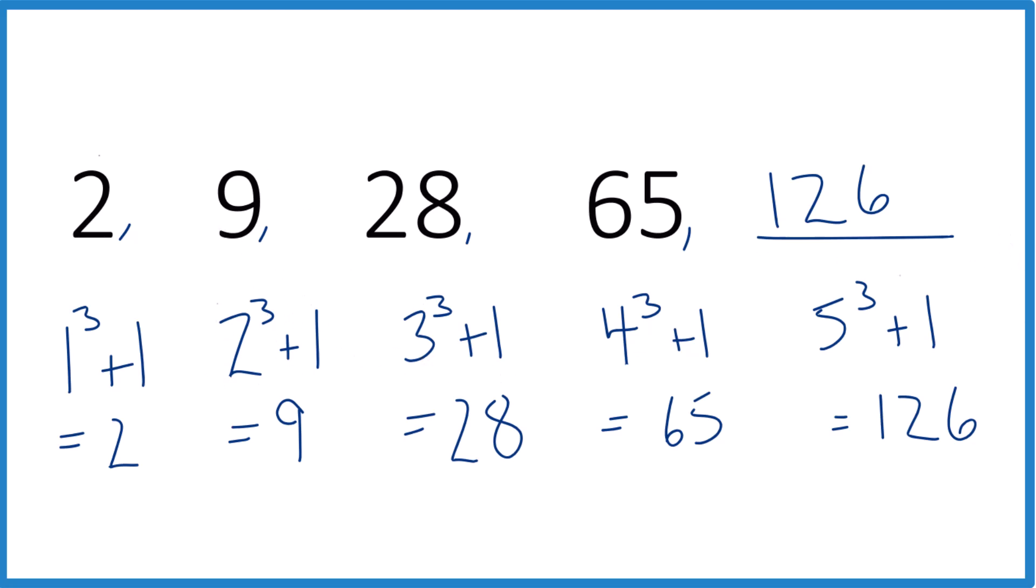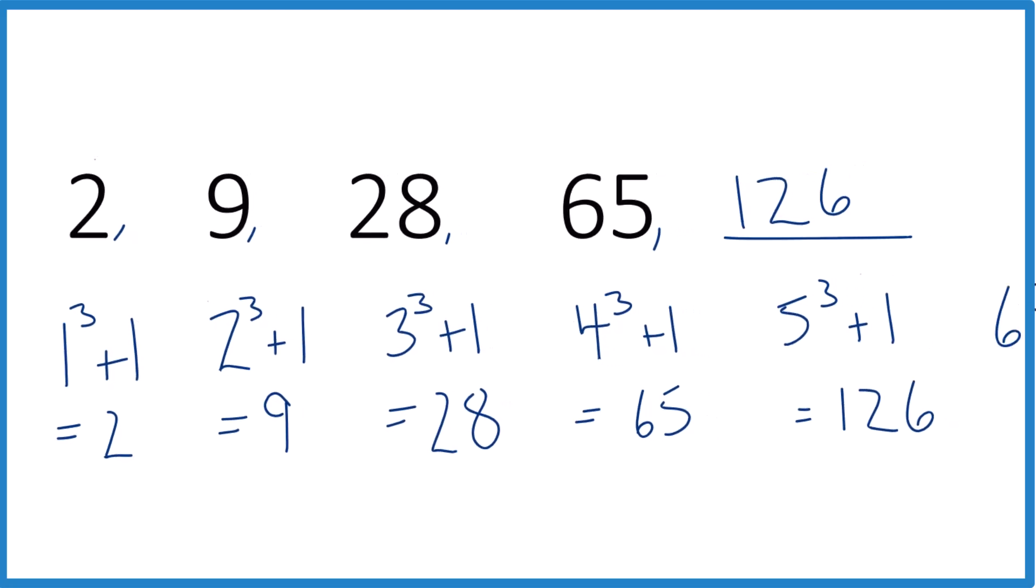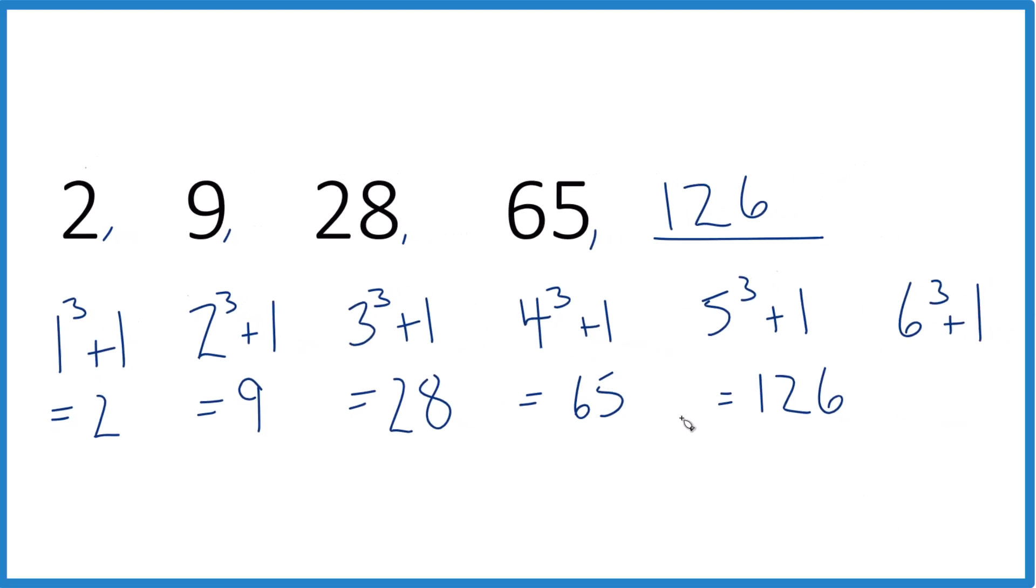So the next would be 6 to the third power plus 1, and that would equal some number as well. So really, that's the way I approached it. I was kind of lucky seeing this—I was looking at a similar pattern that had cubes in it earlier, and that's what made me look at this. Either way, that's how you figure out what number comes next in this sequence.